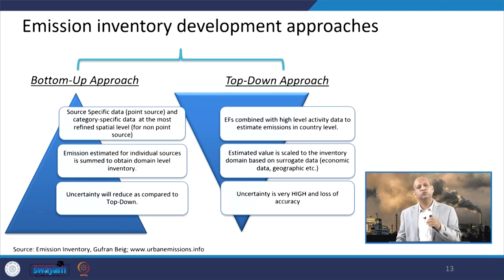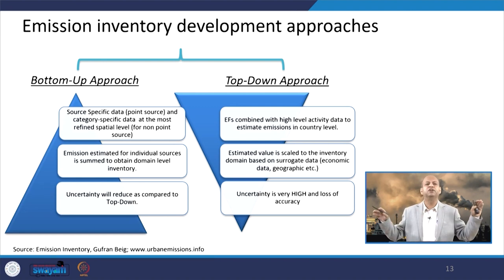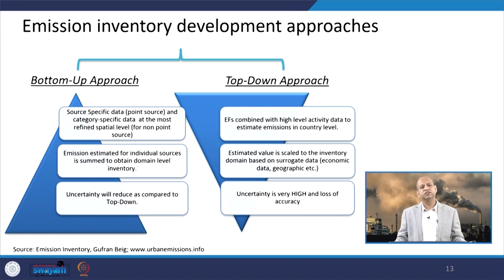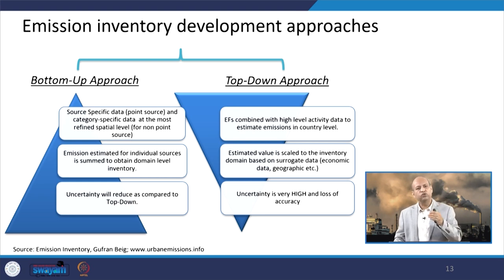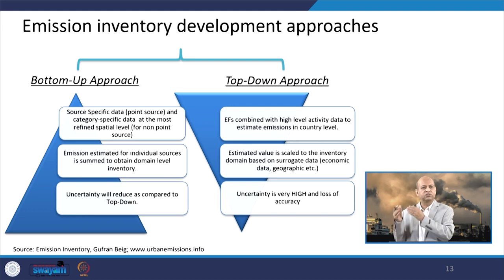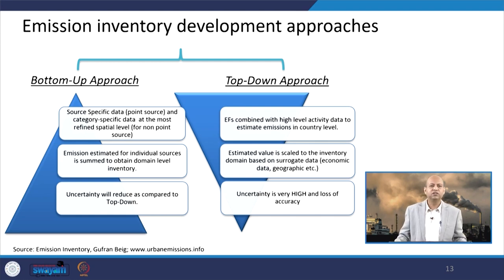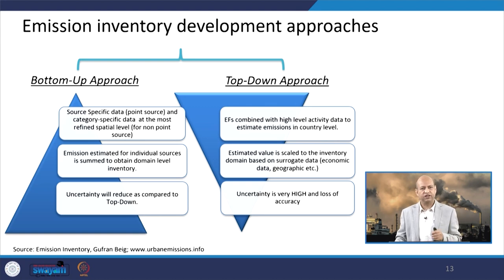Emission inventory development approaches differ — bottom-up approach or top-down approach. In the bottom-up approach, we go for detailed activity data, which is very data-intensive. For example, for a transportation sector emission inventory, you need detailed values: how many vehicles are there, within those how many four-wheelers, how many two-wheelers, within two-wheelers how many two-stroke versus four-stroke, within four-wheelers how many are driven by diesel, petrol, or CNG. The more data you have, the more realistic the emission inventory.